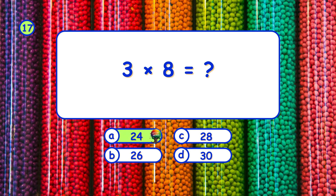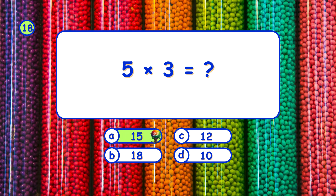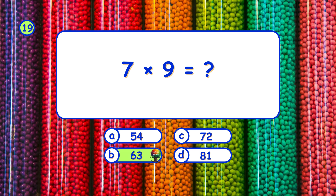What is 3 times 8? It's C, 24. What is 5 times 3? It's A, 15. What is 7 times 9? It's B, 63.